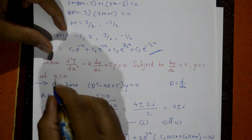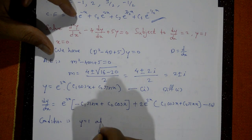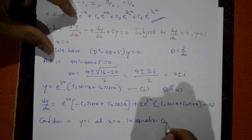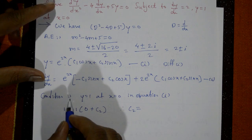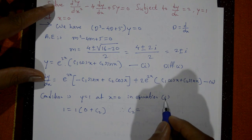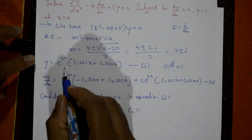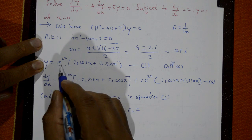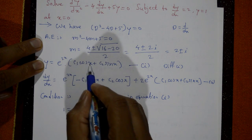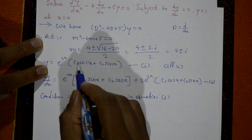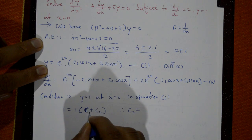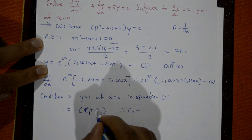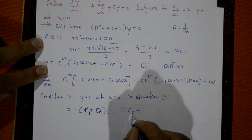Apply condition y = 1 at x = 0 in equation number one. Substituting: 1 = e^0(c₁ cos 0 + c₂ sin 0) = 1·(c₁·1 + c₂·0). Therefore c₁ = 1.